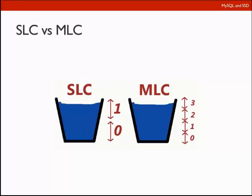But there is a significant drawback to MLC technology. SLC can handle around 100,000 erase cycles, while MLC is much less — around 10,000 cycles. New 25nm MLC technology only offers 5,000 erase cycles. So for SLC we get benefits: it is very reliable and provides very good performance. The drawback is very limited capacity — I have seen drives only up to 800 GB — and it is very expensive, around $30–$50 per gigabyte.